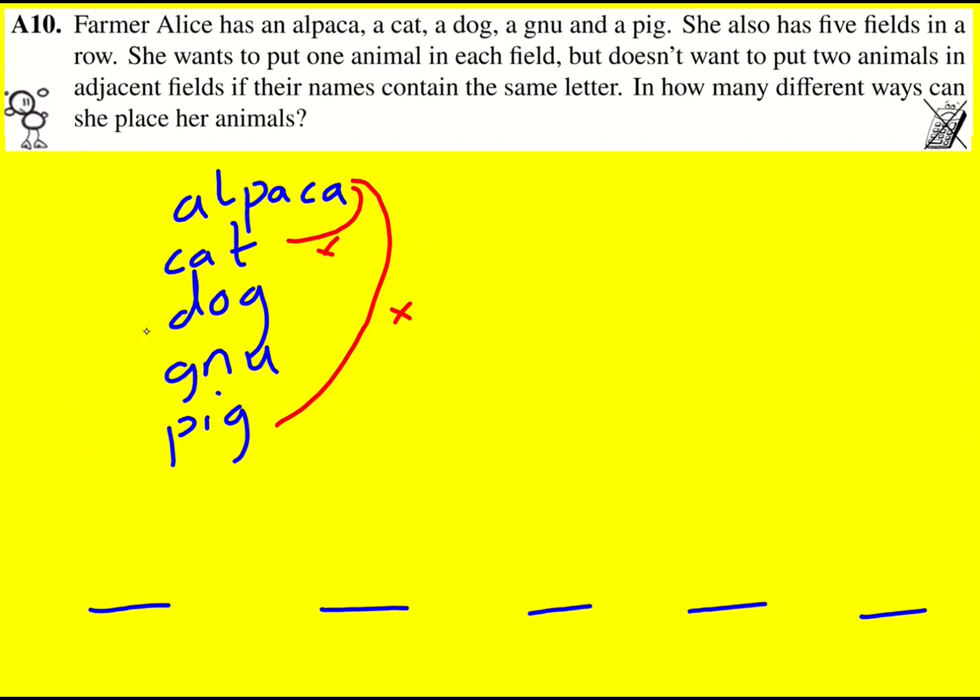The dog can't be next to the gnu or the pig. And then I think the gnu can't be next to the pig either.